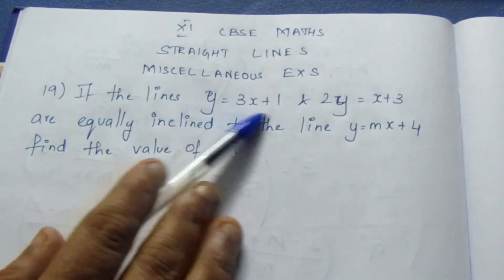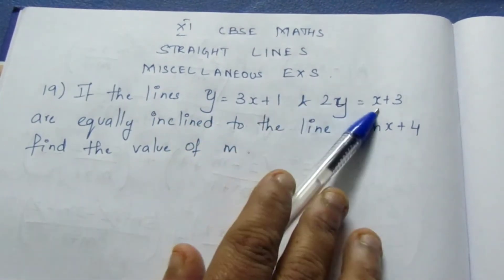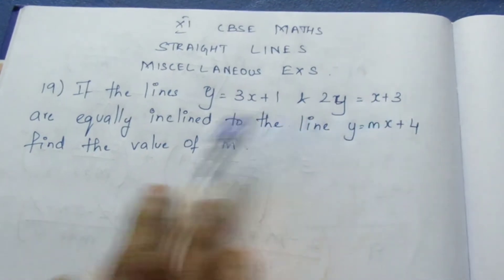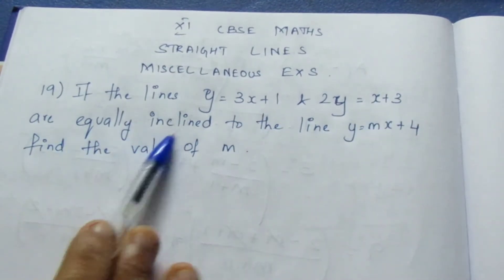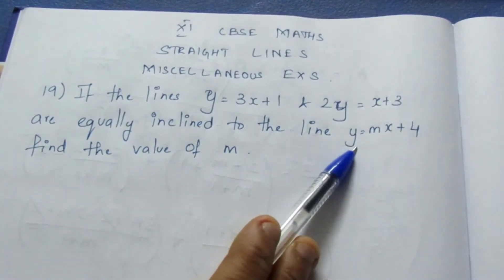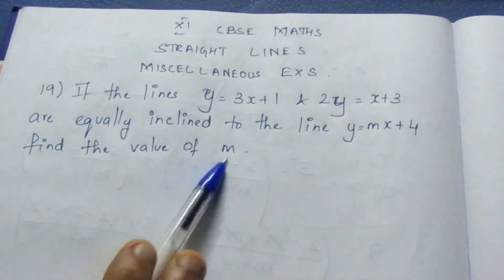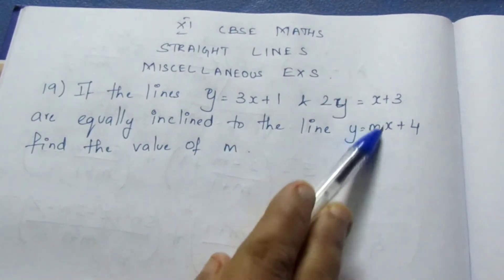If the lines y = 3x + 1 and 2y = x + 3 are equally inclined to the line y = mx + 4, we need to find the value of m.